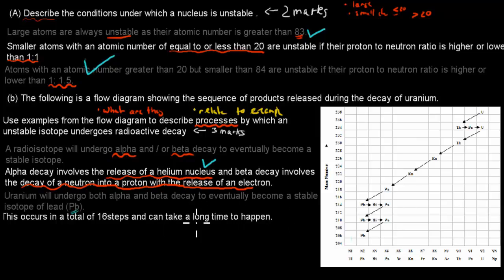And then I mentioned that this occurs in a total of 16 steps and it can take a long time to happen. This can actually take millions of years for uranium. But when you get this kind of question, you might not know exactly how long it takes. It's just good to mention that in most cases, if it goes from one product which is radioactive to a stable one, it will take a long time.